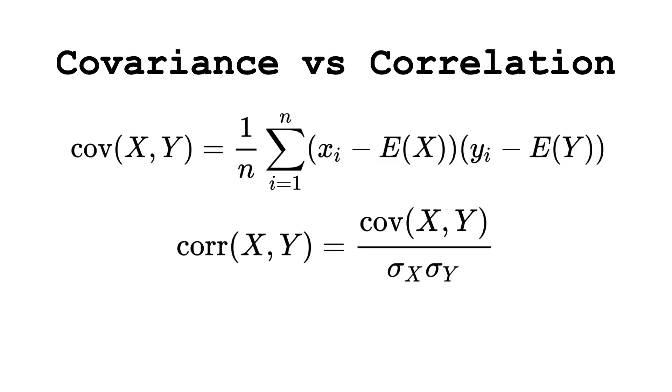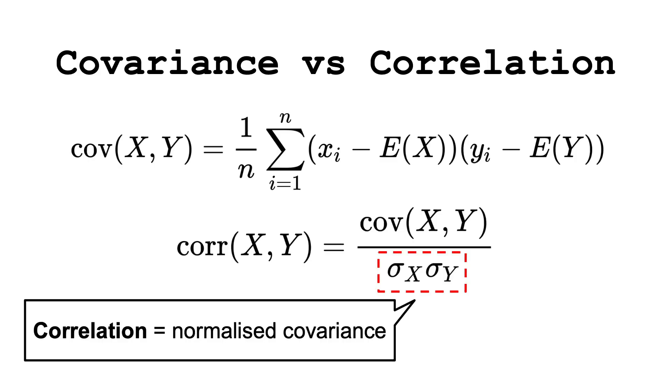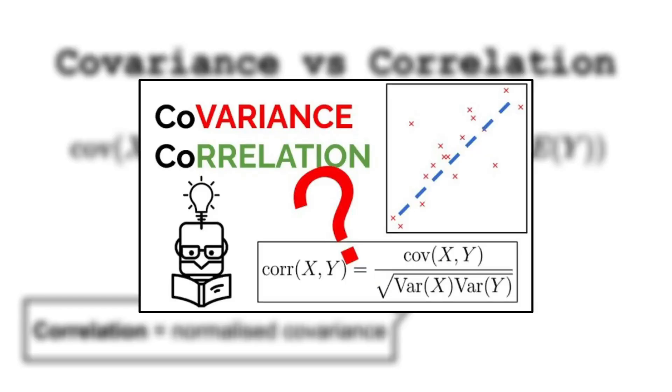What I mean by this is that even though we have a higher covariance between two random variables compared to other two random variables, it doesn't directly imply that their relationship is stronger. See my video about correlation vs covariance to find out more about this subject.